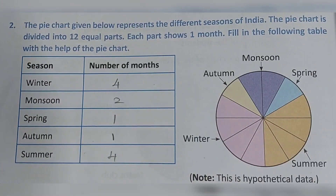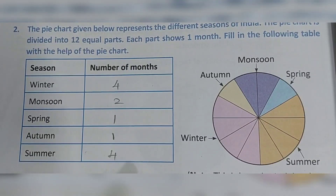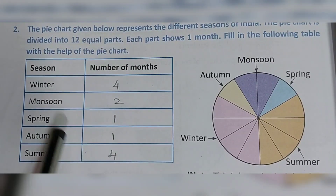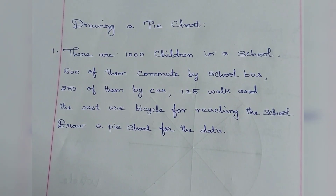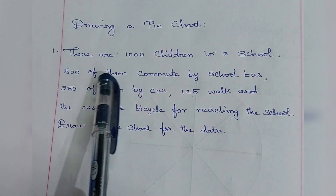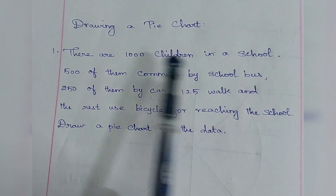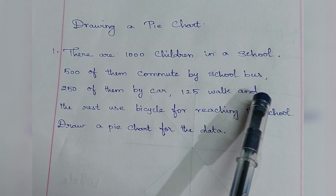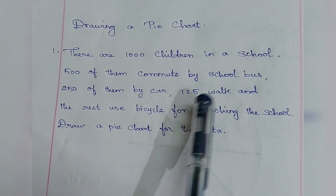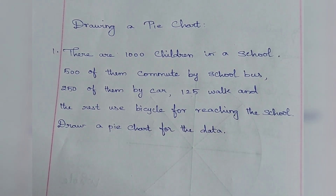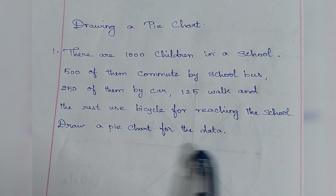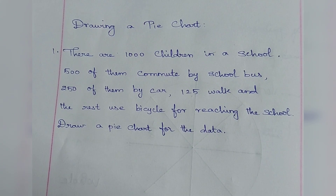This is how we interpret a given pie chart — understand it and answer the following questions. Now let us see how to draw a pie chart using given data. There are 1000 children in a school: 500 commute by school bus, 250 by car, 125 walk, and the rest use bicycle. Draw a pie chart for this data.